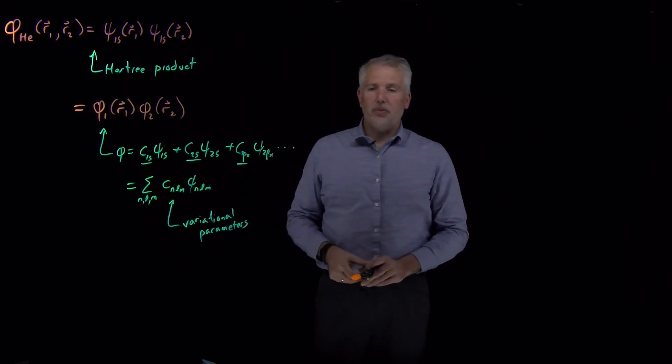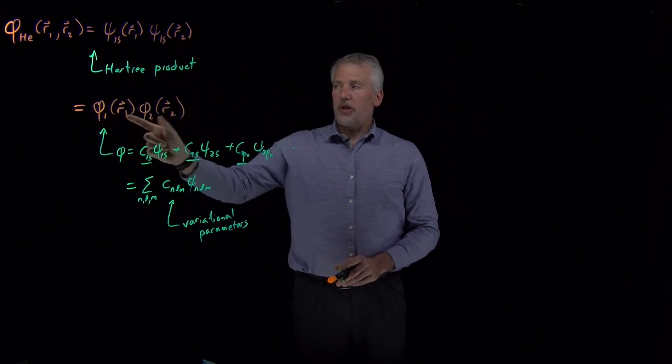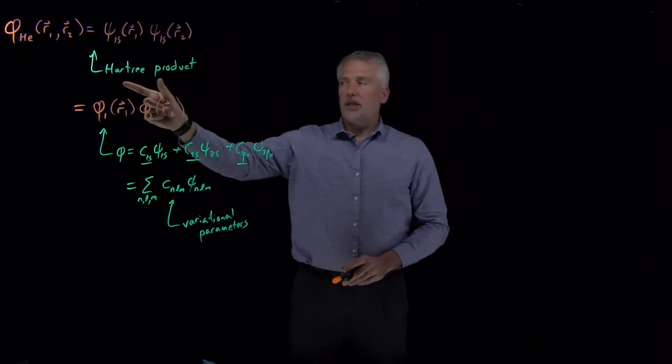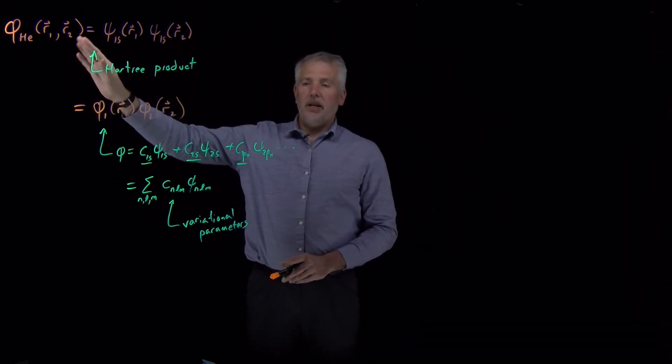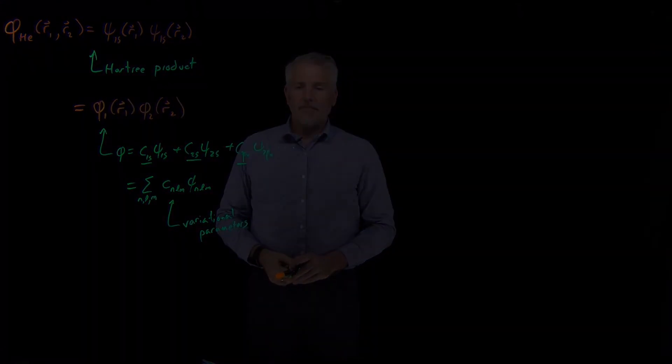So the general idea then is to use a linear combination of all the wave functions we have access to, to write one electron functions, combine those one electron functions in a Hartree product to get a trial function, and then plug those into the variational theorem and find the optimal wave function from that point.